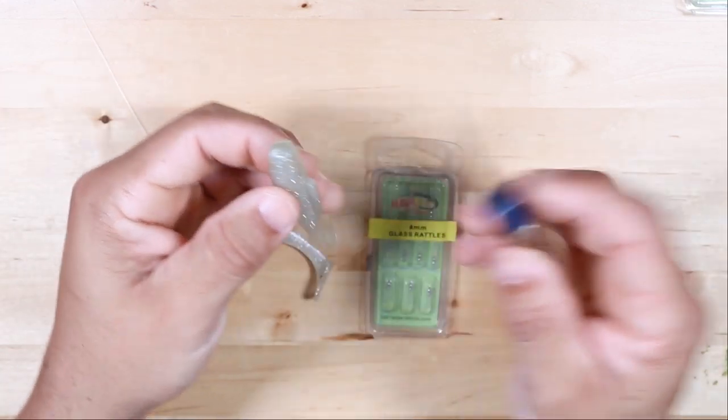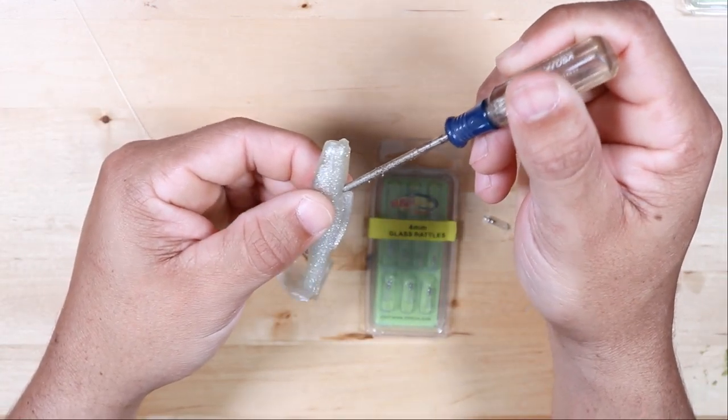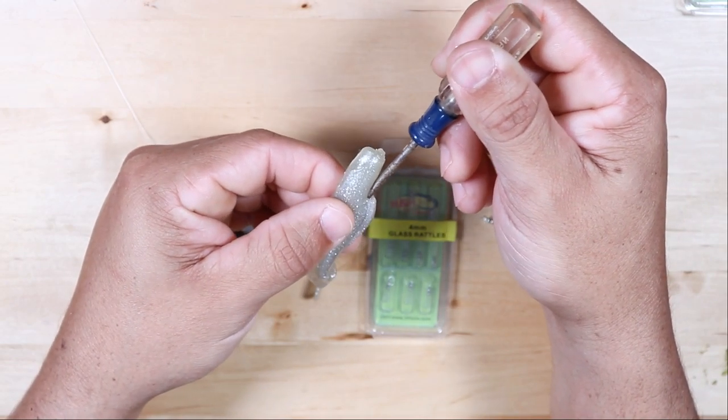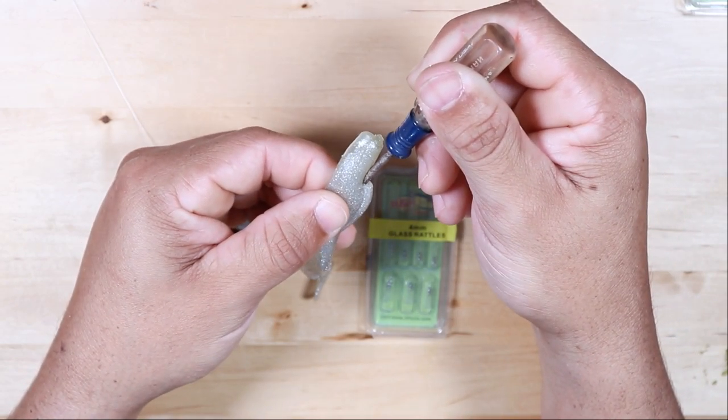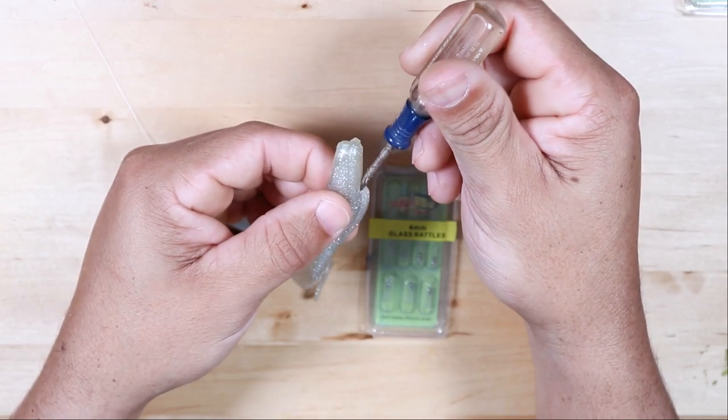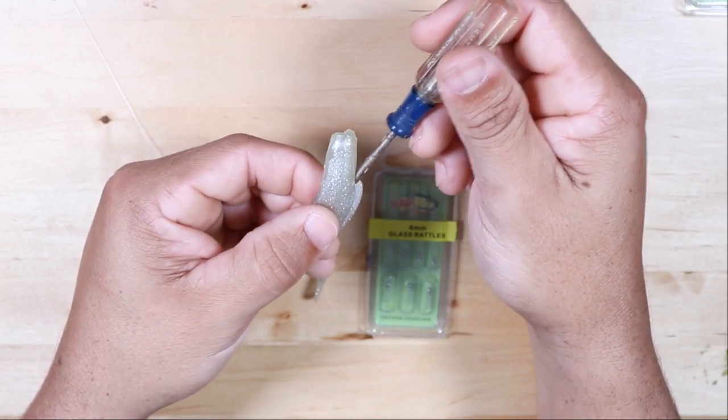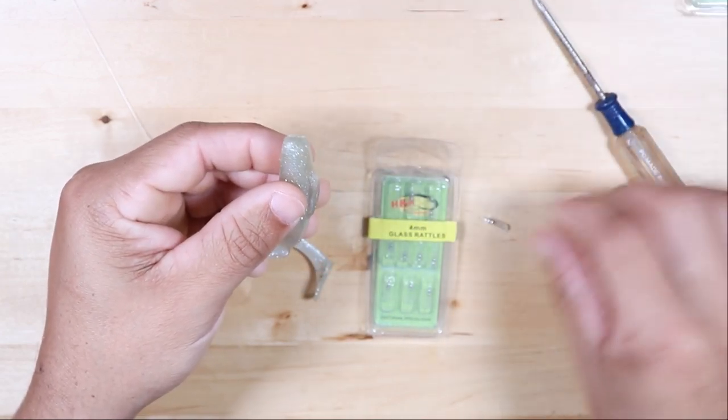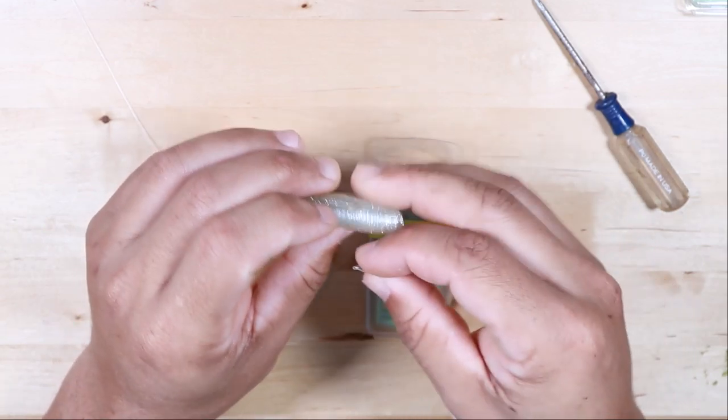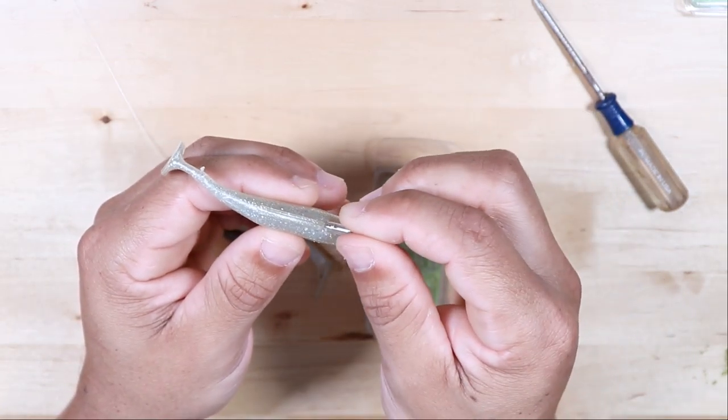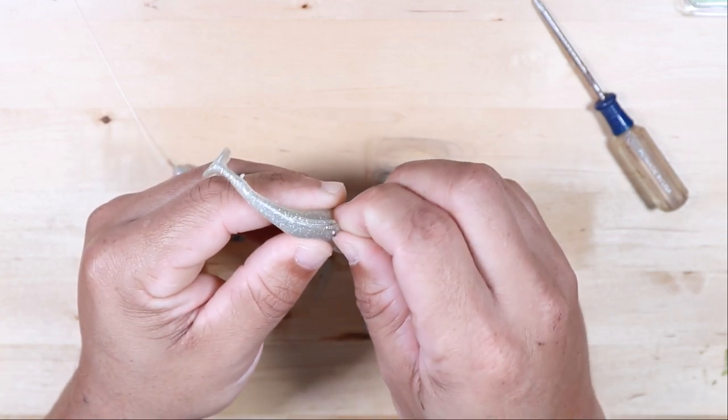Once you have that heated up, you can go to where you want to insert that rattle. You can see how easily that's going through the bait because it is heated up. It's going right through that bait. Again, I'm going at a little bit of an angle just so the rattle sits in there nicely. Go ahead and take it out. You want to be kind of quick so it doesn't cool down again.